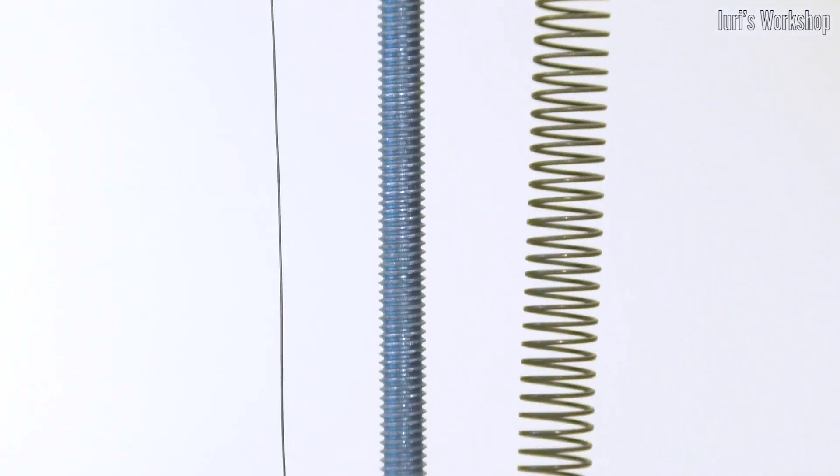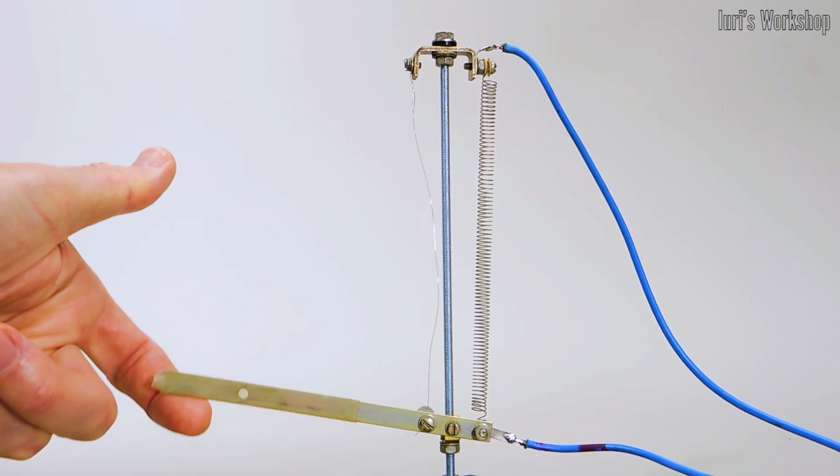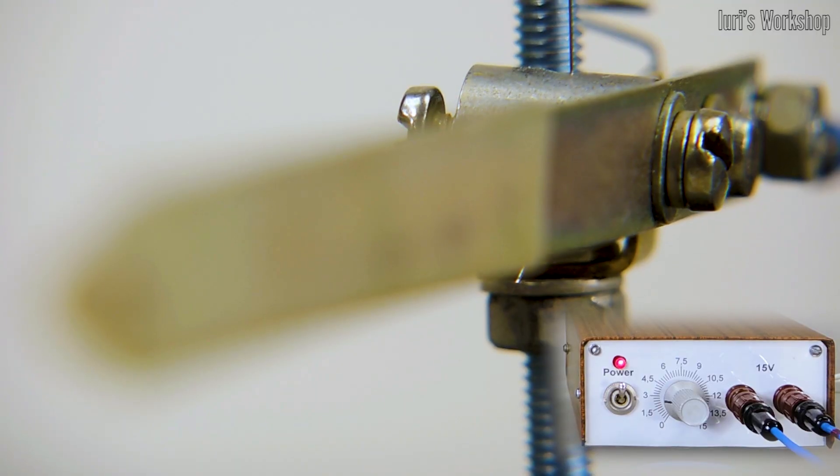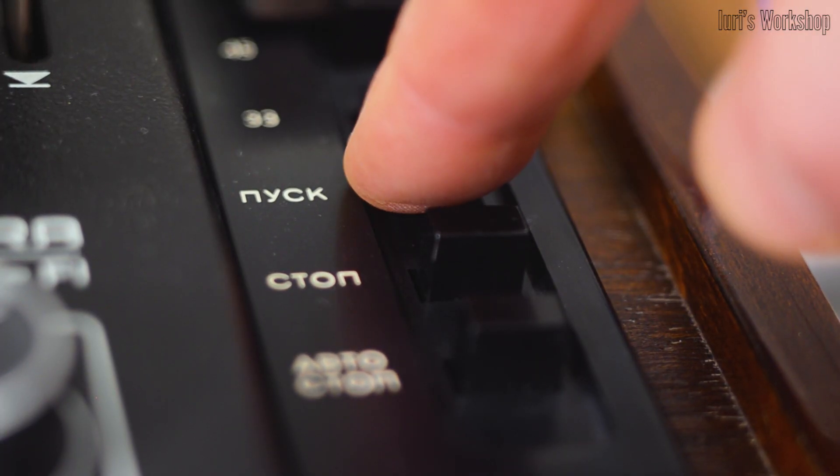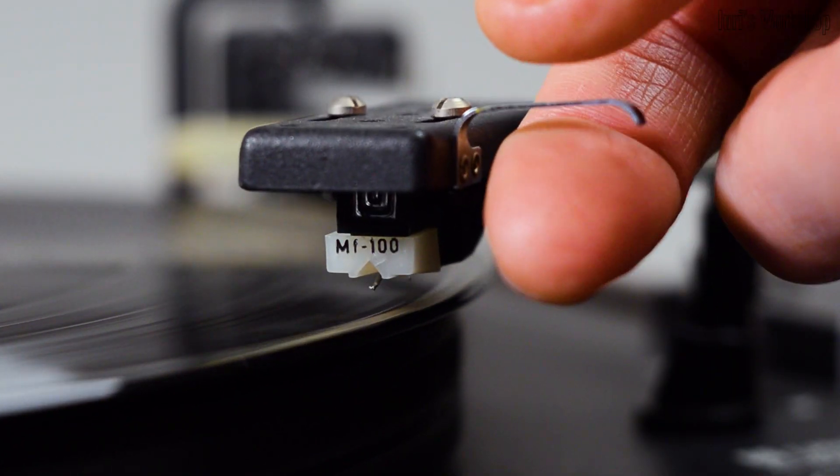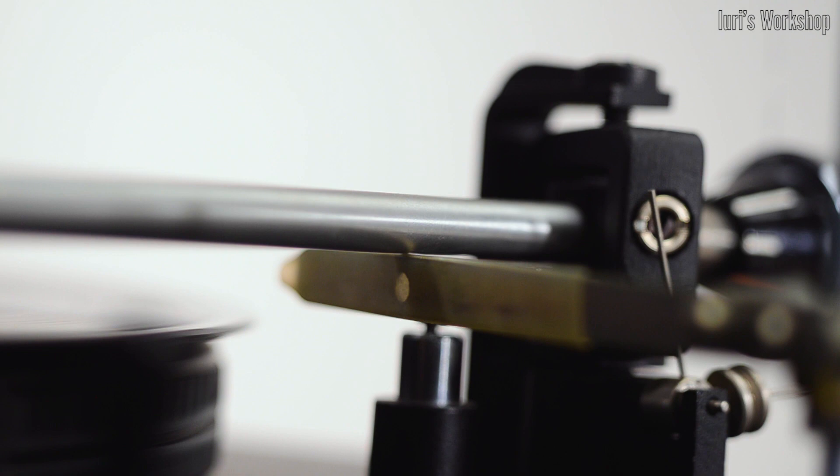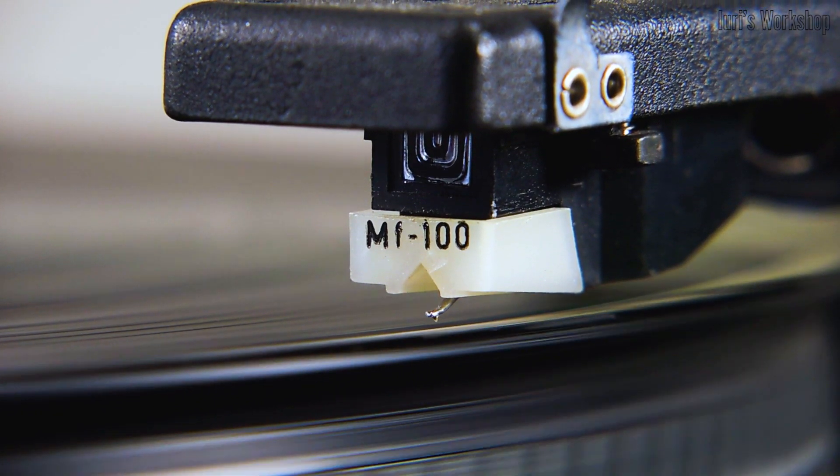This is a working model of a micro lift for a turntable. In real products, nichrome wire is placed horizontally, but this does not change the principle of operation. An electric current flowing through a nichrome wire heats the ladder and its length increases. By varying the amperage, you can set the required speed of lowering the needle onto the plate. A nichrome wire with a diameter of 0.2 millimeters was used in the layout.